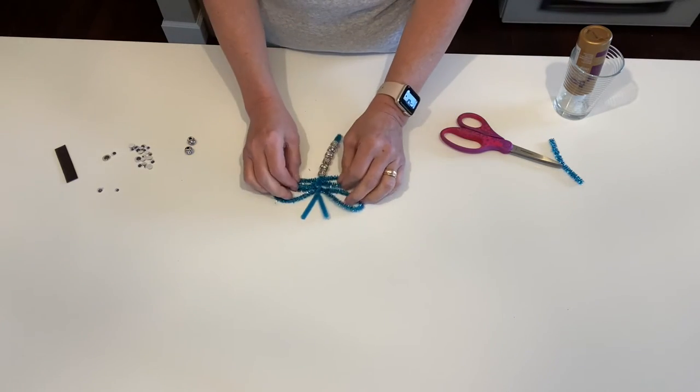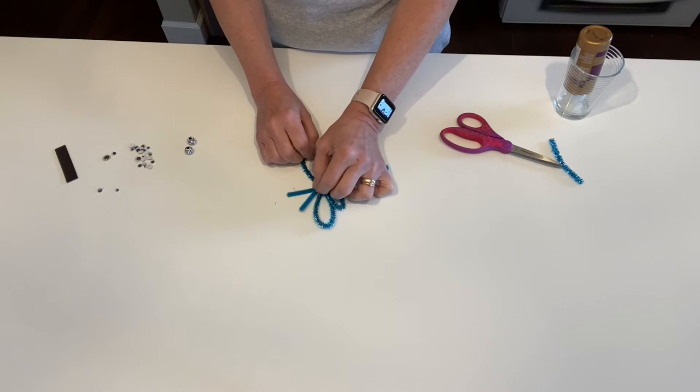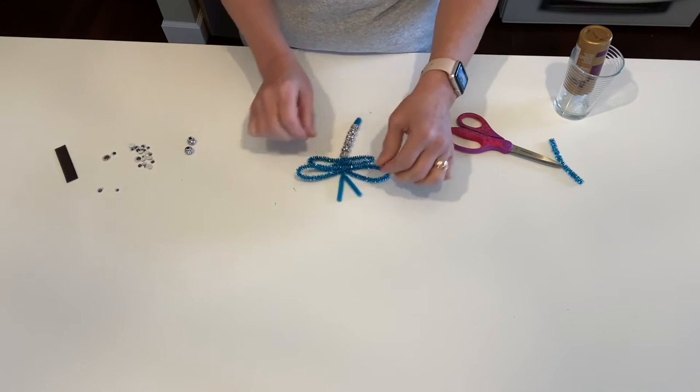Right there you've got your two sets of wings. They're easy to slide back and forth at this point, so if you need to even them out a little bit you can do that.